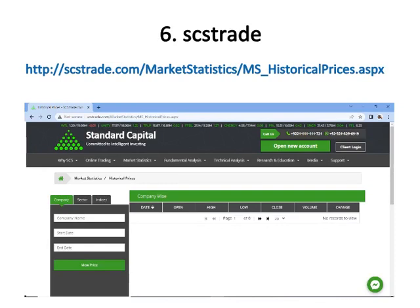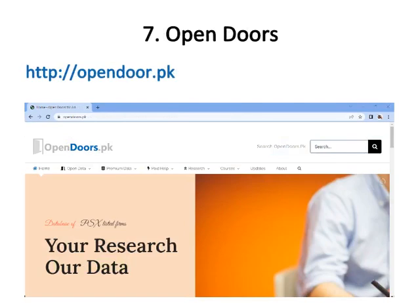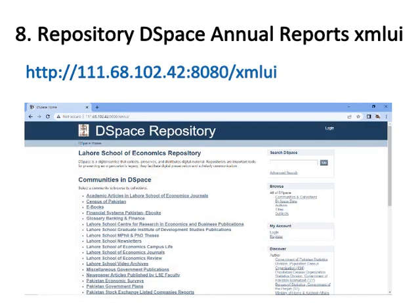Number seven is Open Doors, where you can get all reports, share prices, and research assistance from this web link. Number eight is DSpace Repository, where you will get a lot of data including Pakistan census, financial reports of listed and unlisted companies, eBooks, surveys, theses, and more.